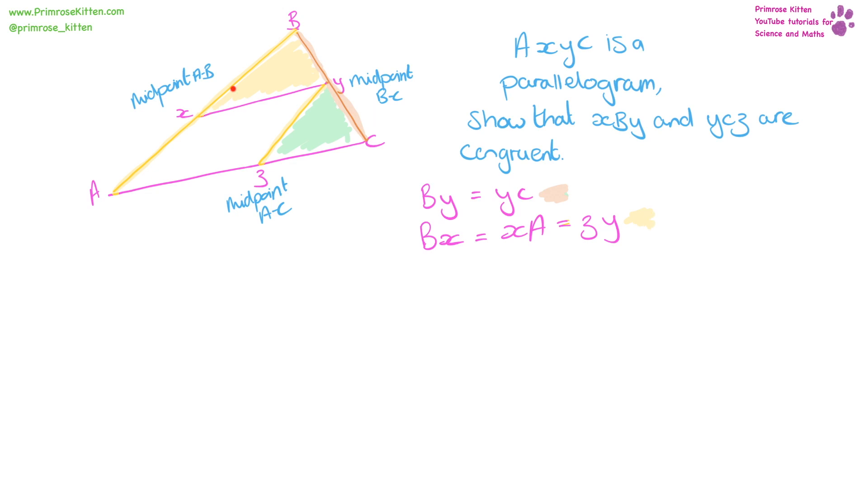Because we can see that this side and this side are the same, this side and this side are the same. So we've already got two pieces of evidence, we just need a third. Our third piece of evidence is also along the same lines. Because we know that Z is the midpoint of AC.